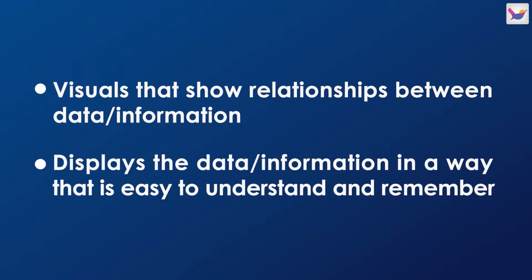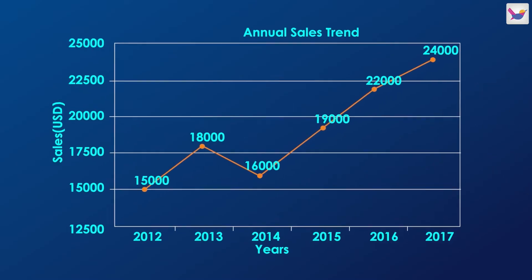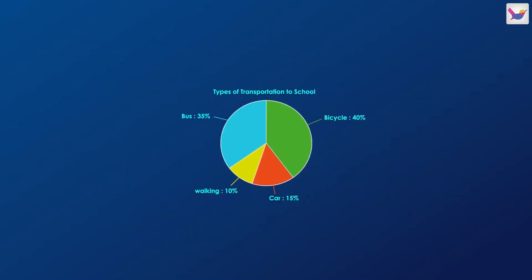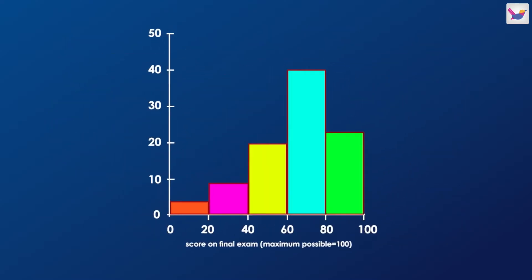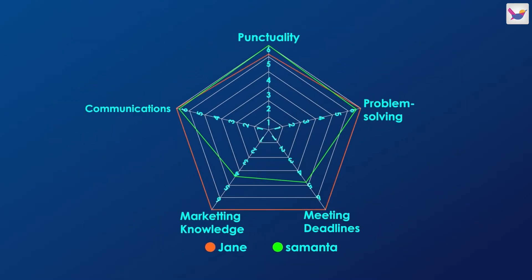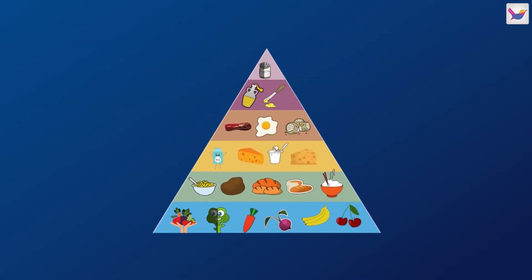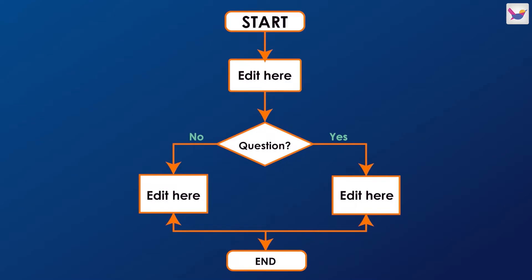Graphs and charts come in different types. For example: line graph, bar graph, pie chart, histogram, spider chart, pyramid, flow chart, and more.